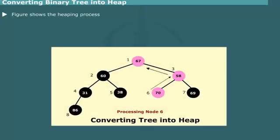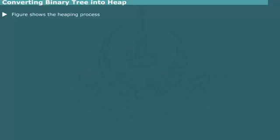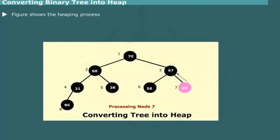Then, node 6 is processed. It contains element 70, which is larger than the element 58 in the parent node. So, elements 58 and 70 are exchanged. Next, node 7 is processed. It contains element 69, which is larger than the element 67 in the parent node. Therefore, the elements 69 and 67 are exchanged.